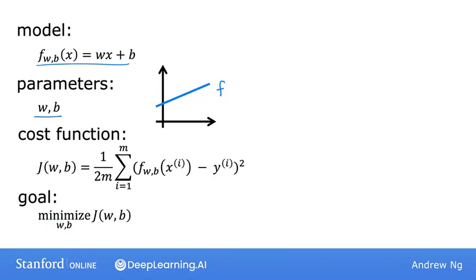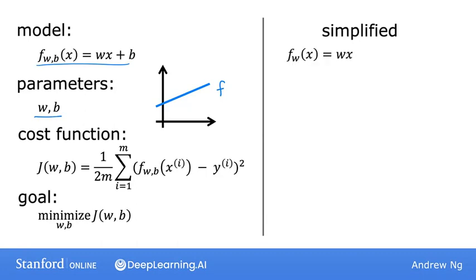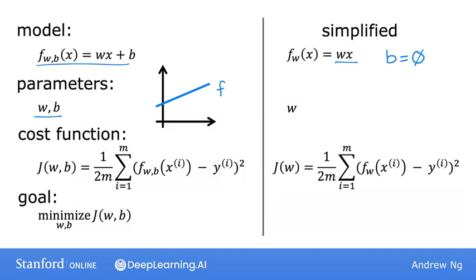In order to better visualize the cost function J, let's work with a simplified version of the linear regression model. We're going to use the model f_w of x equals w times x — this is like taking the original model and setting the parameter b equal to zero, so it just goes away from the equation. So f is now just w times x. You now have just one parameter w, and your cost function J looks similar to what it was before, taking the difference and squaring it, except that f is now w times x_i, and J is a function of just w. The goal becomes finding the value of w that minimizes J of w.